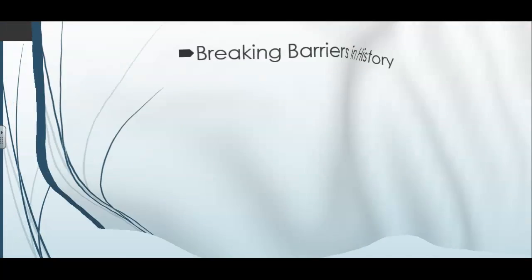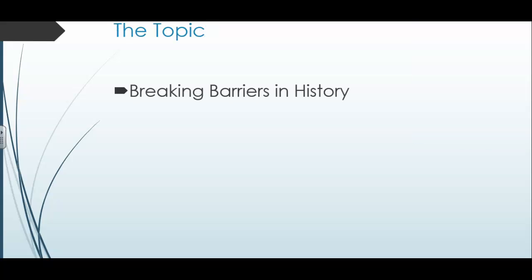Lastly, your topic: this year's theme is breaking barriers in history. You're going to talk about someone or something that has broken a barrier — whether a physical barrier like a wall, or a metaphorical one like Jackie Robinson being the first person of color to play in Major League Baseball, or the first woman elected to a position. If you have any questions, please contact me. Everything else you're supposed to be doing is posted on Google Classroom. Good luck.